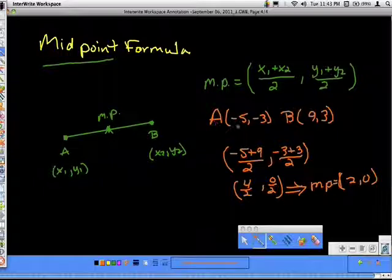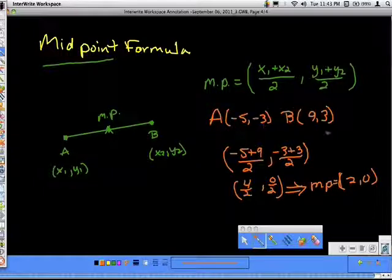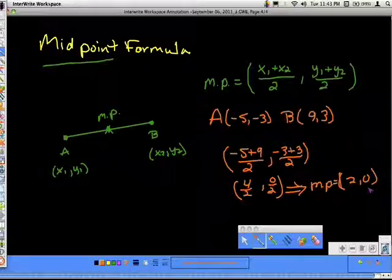So endpoint at negative five, negative three, and nine, three, the exact middle of that line segment connecting A and B, would be at the ordered pair two, zero. So again, pretty simple to work with.